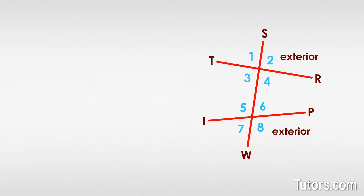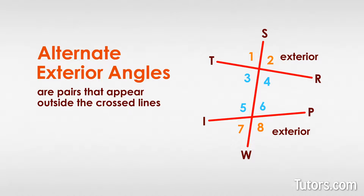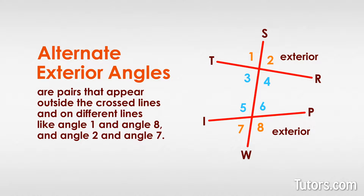The four exterior angles are angle 1, angle 2, angle 7, and angle 8. Alternate exterior angles are pairs that appear outside the crossed lines and on different sides, like angle 1 and angle 8, and angle 2 and angle 7.